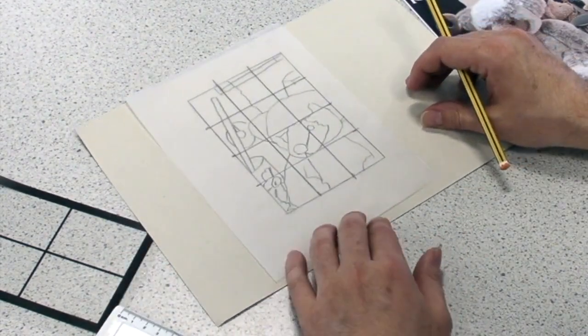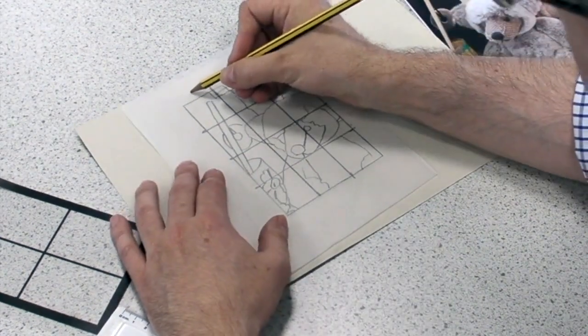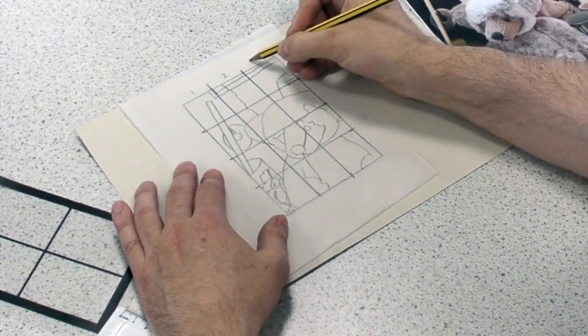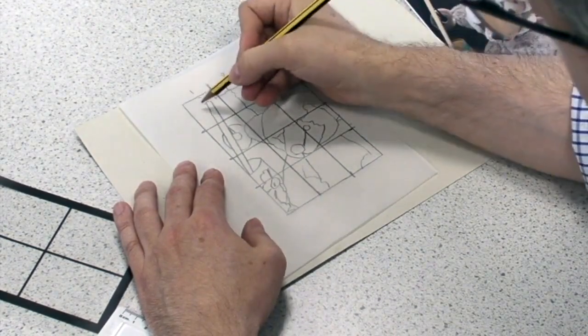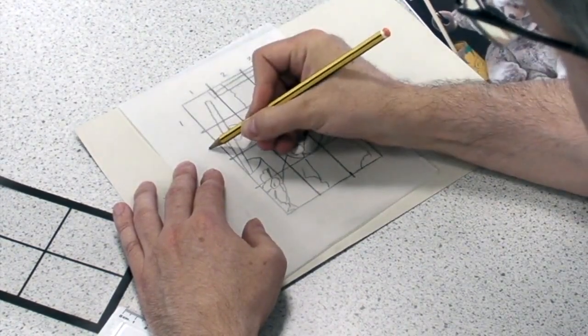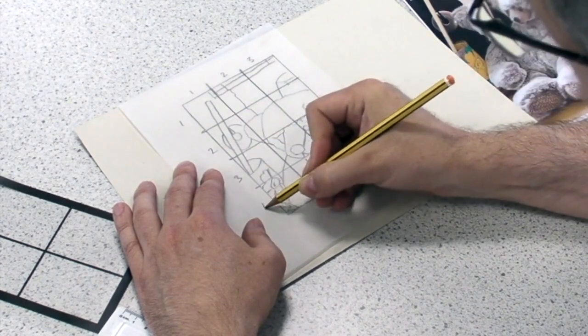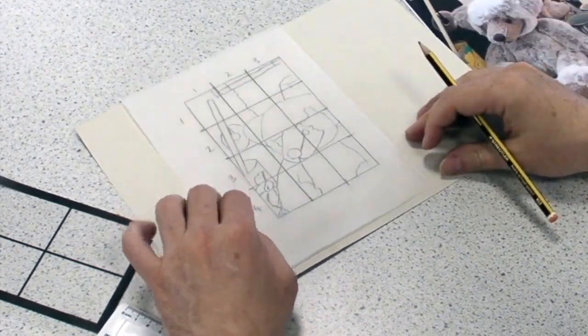So now I've got my grid. My grid has got three squares across, which are three centimeters wide, and four squares down, which are three and a half centimeters.